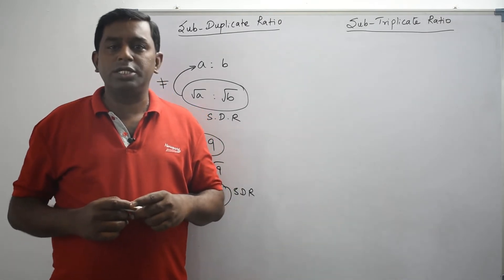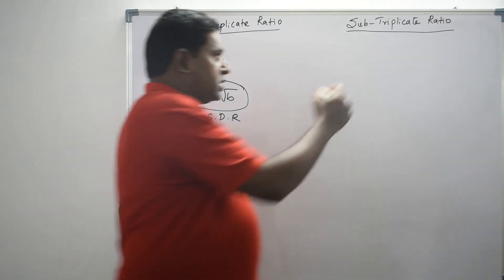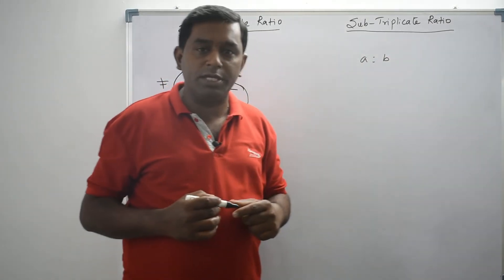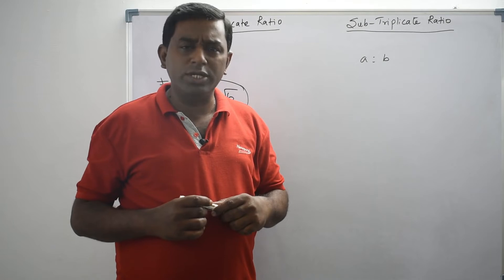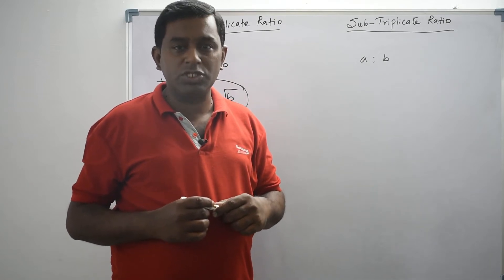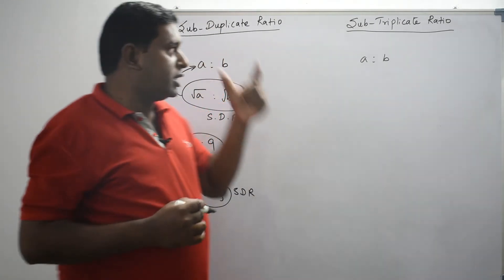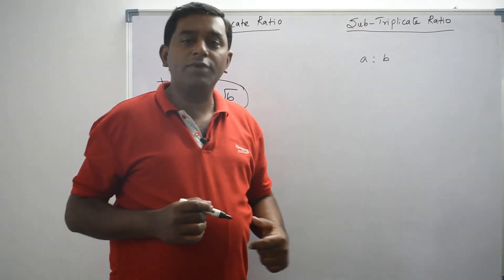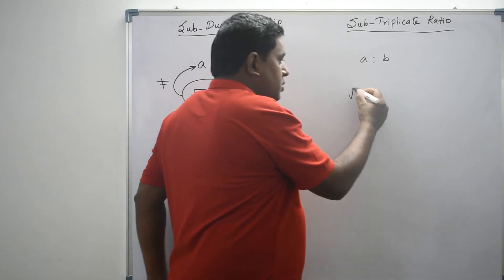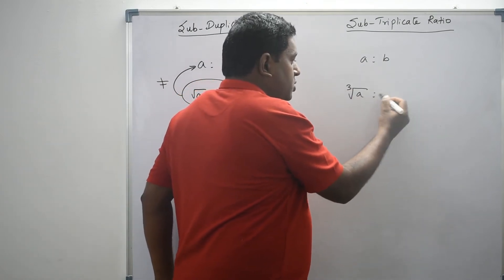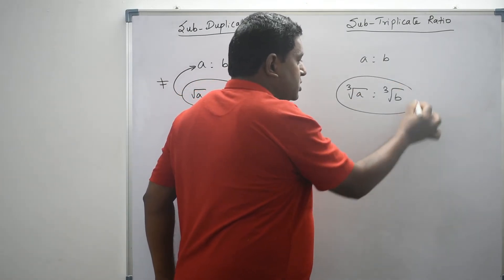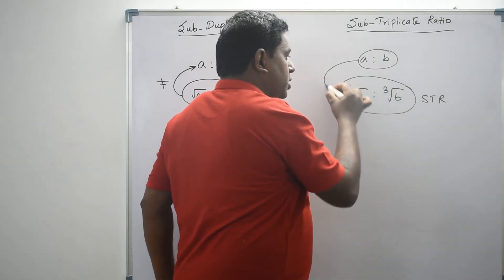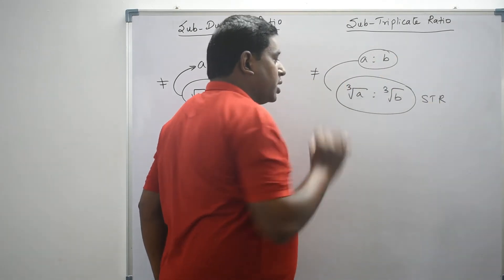Now let's understand subtriplicate ratio. Let us consider the ratio a is to b. I want to get subtriplicate ratio of a is to b. I have to take cube root for both the first term and second term. To get subduplicate ratio we take square root; to get subtriplicate ratio we have to take cube root. So cube root of a is to cube root of b is the subtriplicate ratio of a is to b. And these two ratios are not equal.